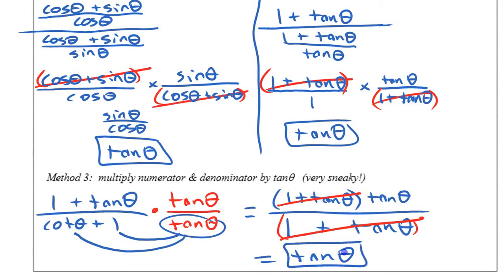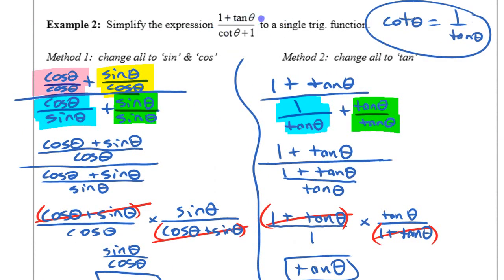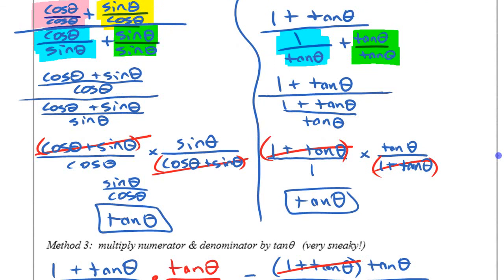So that's three different ways to simplify that expression, and of course you get the same thing every time: tan theta. A similarity across all three methods is that at some point you had to cancel a binomial by a binomial to simplify. When you look at a trig expression that is a binomial over a binomial and you're trying to get it to a single trig function, at some point you're most likely going to have to cancel two binomials.